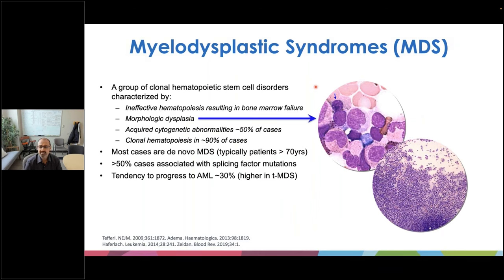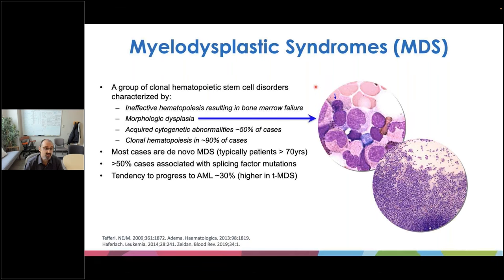One such hematological malignancy is myelodysplastic syndromes, or MDS, characterized by ineffective hematopoiesis resulting in bone marrow failure, morphologic dysplasia, acquired cytogenetic abnormalities in approximately 50% of cases, and clonal hematopoiesis in as many as 90% of MDS cases. Most cases are de novo, typically occurring in patients 70 and over. What's particularly interesting is that over 50% of cases are associated with mutations in splicing factors, with a tendency for MDS patients to progress to acute myeloid leukemia in about 30% of cases.